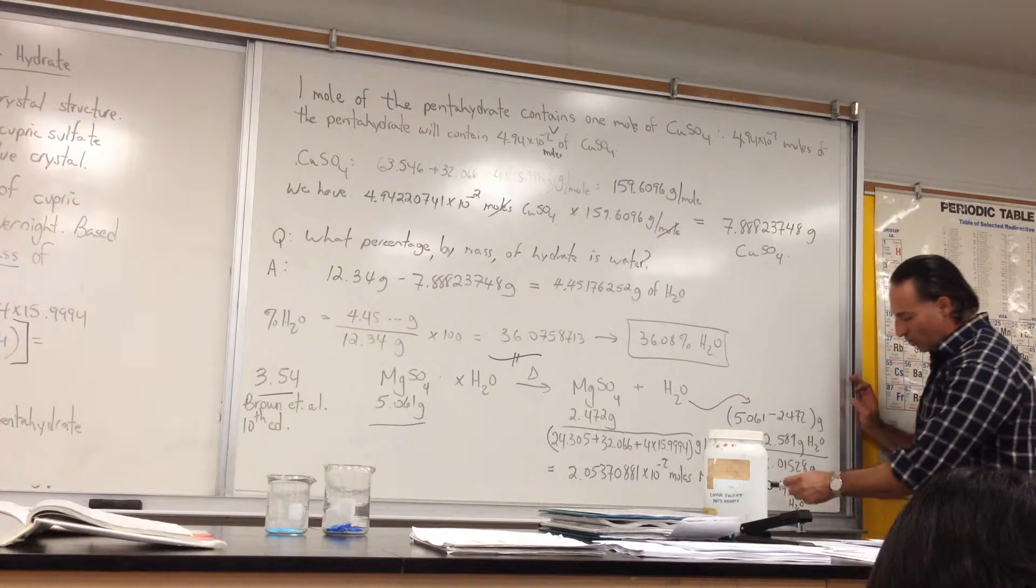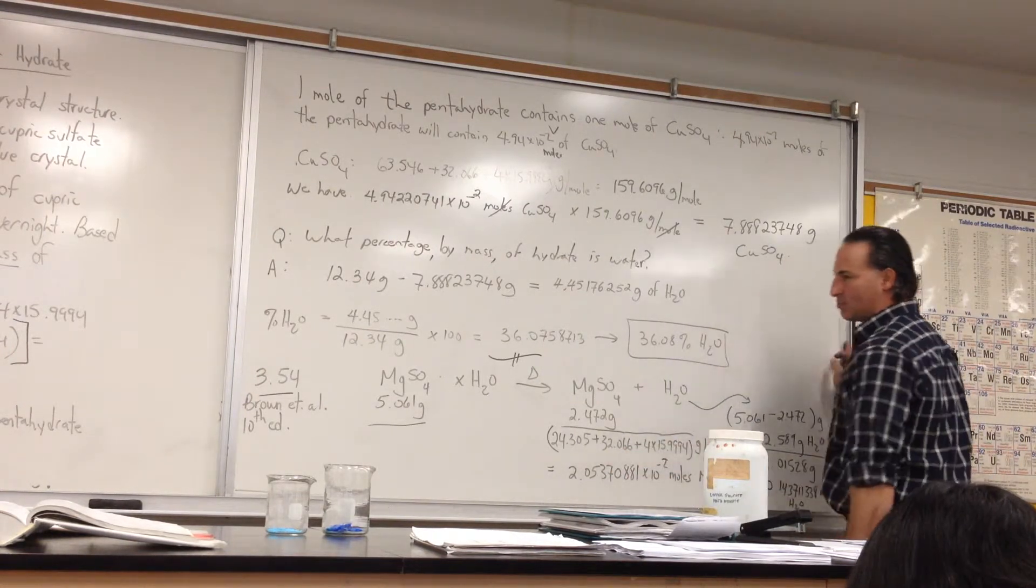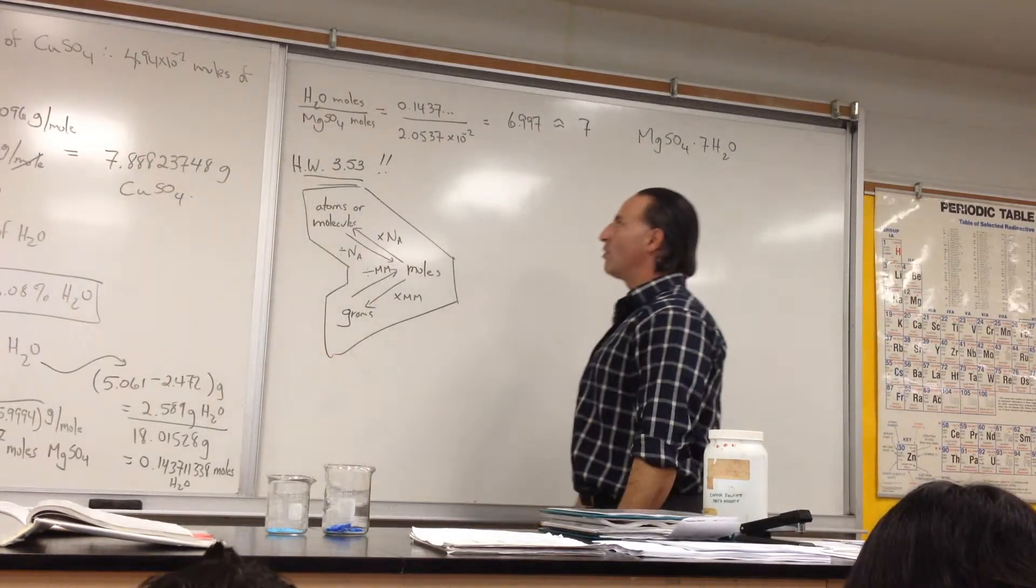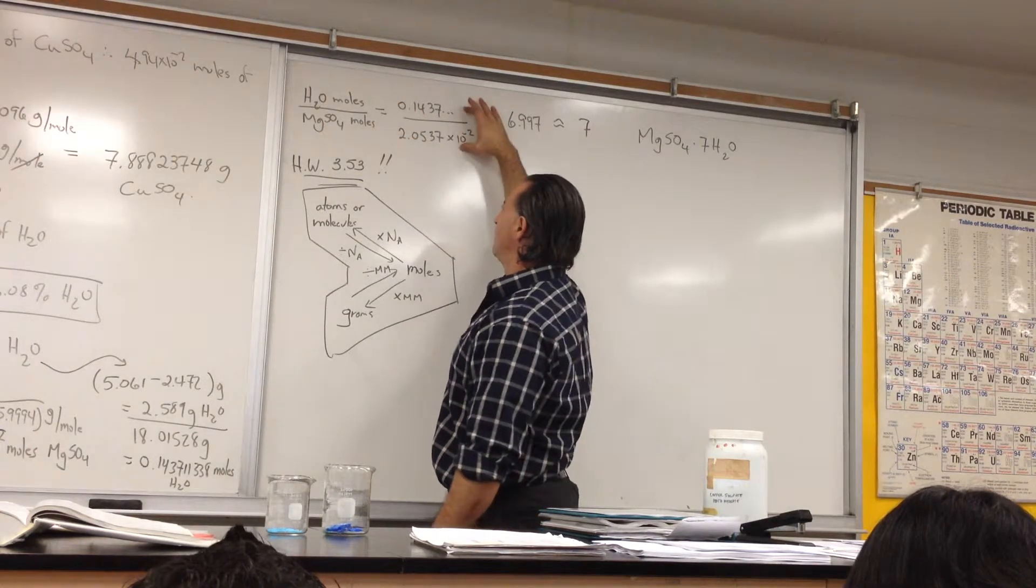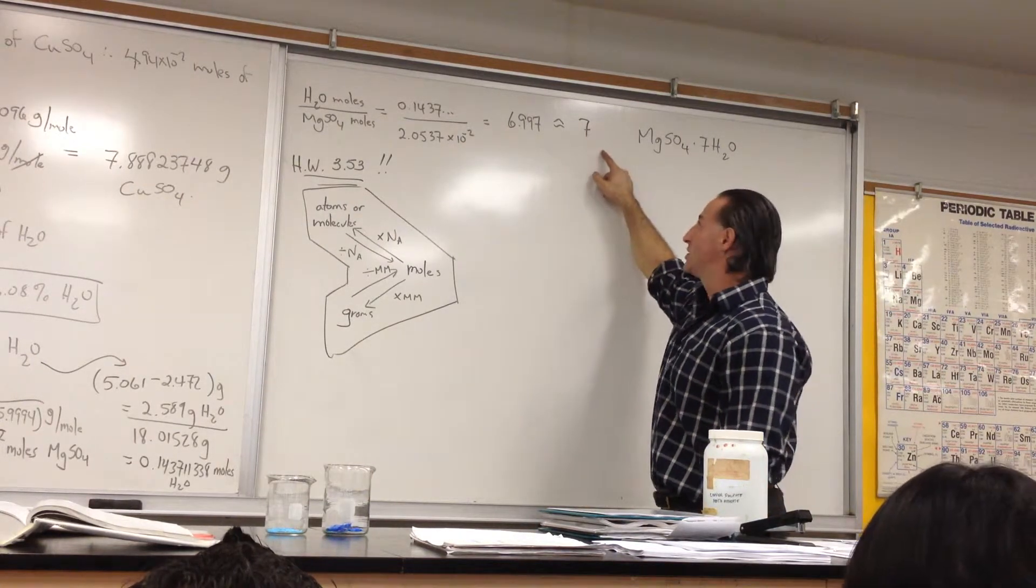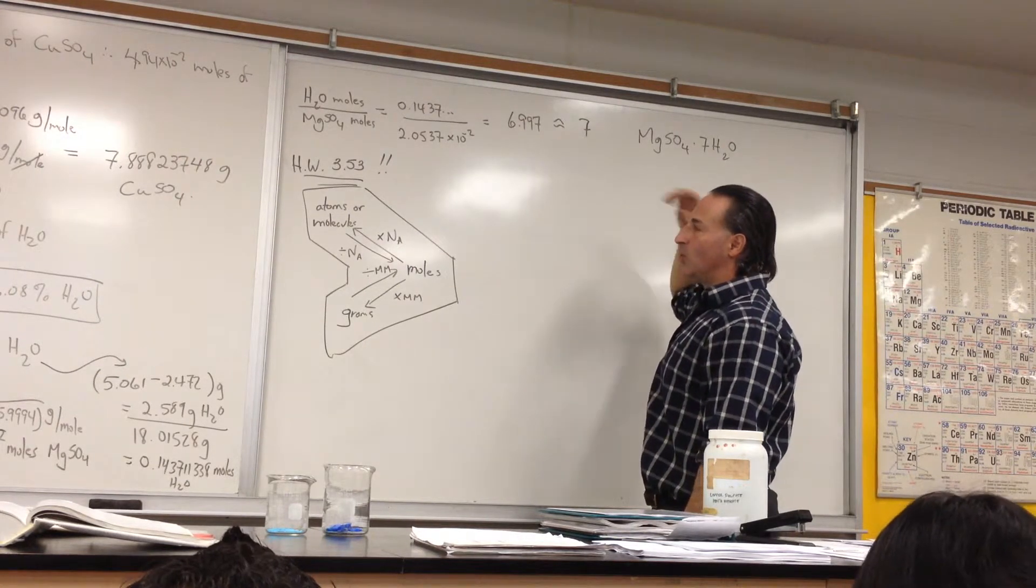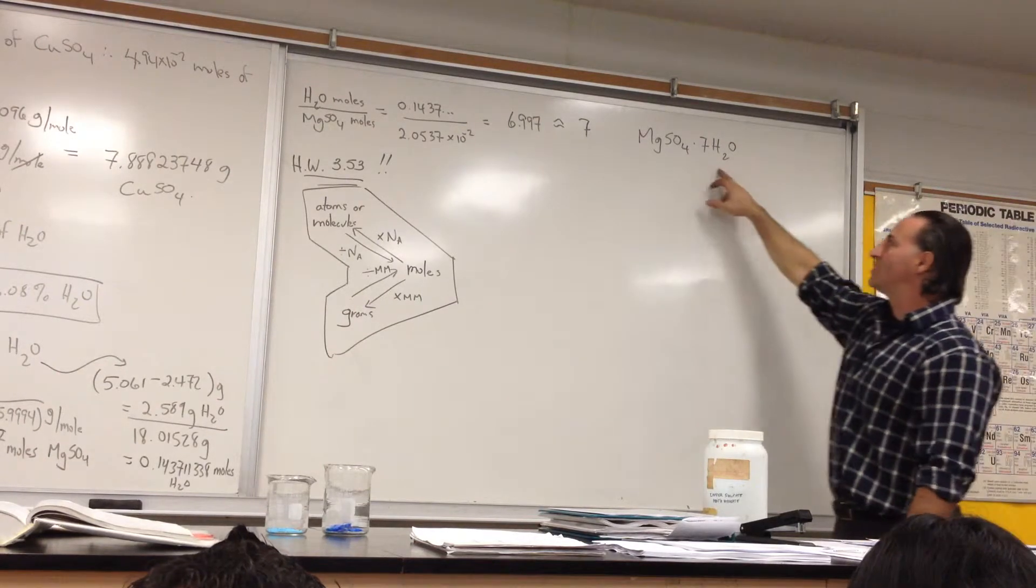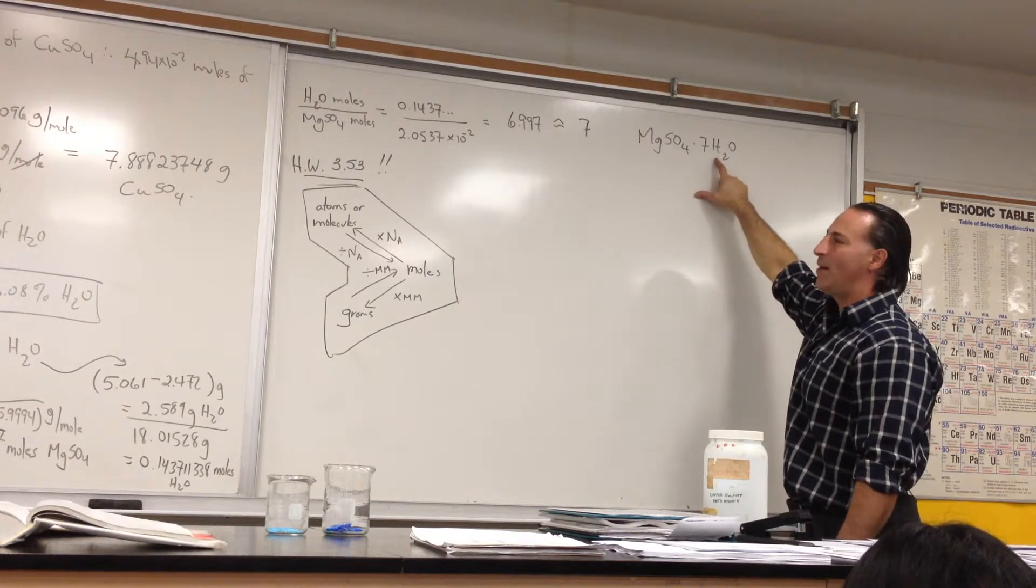Now, we have the moles of water that were present in the crystal, and we have the moles of magnesium sulfate that was present in the crystal. So that allows us to set up a proportion. Moles of H2O and moles of magnesium sulfate, if you divide those two numbers, you get 6.997, which looks an awful lot like 7, which means the mole fraction of H2O versus MgSO4 is 7 to 1. So that's the structure of our crystal. It's magnesium sulfate heptahydrate.